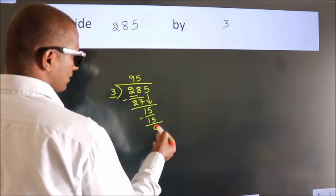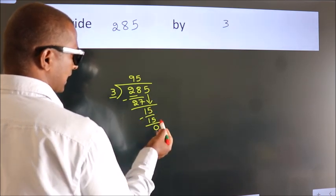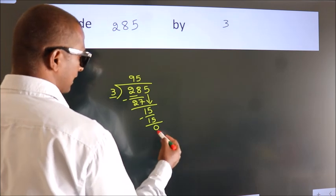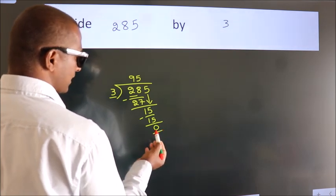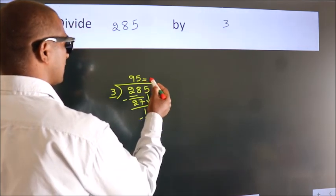After this, no more numbers to bring down and we got remainder 0. So, this is our quotient.